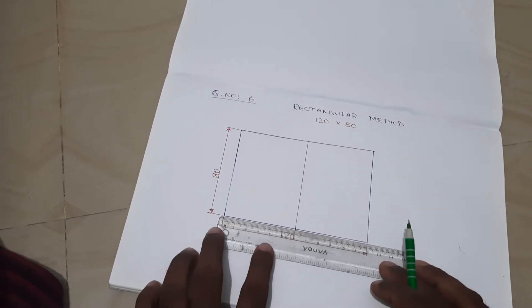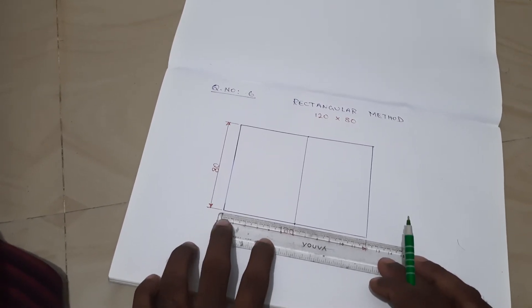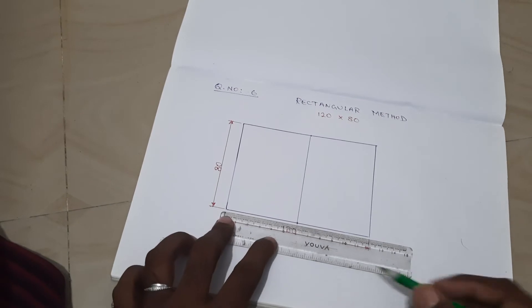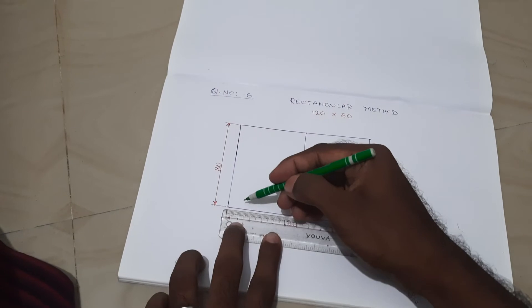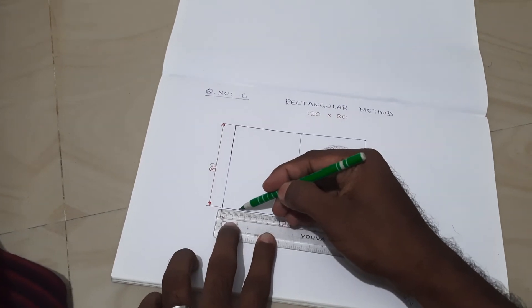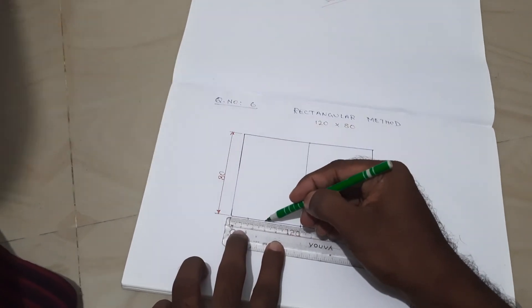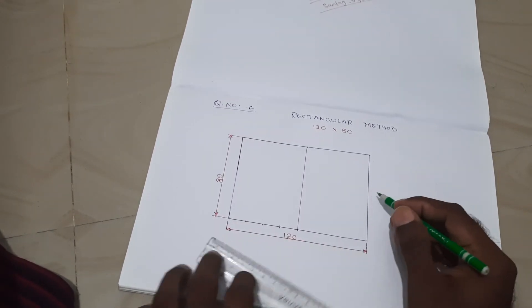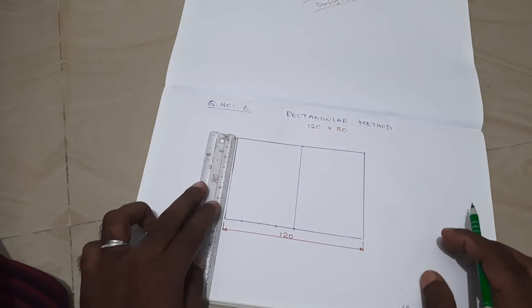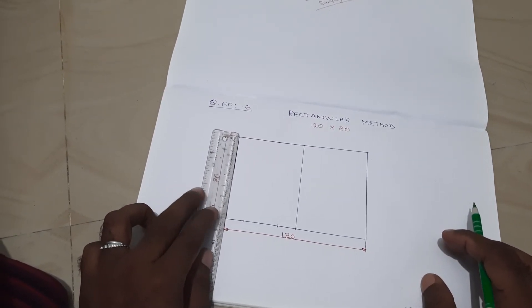For the bottom, we have 60 mm, so 60 divided by 4 is 15. So make a point at 15 mm, 15, 30, 45. Then similarly, the vertical side has an 80 mm value.